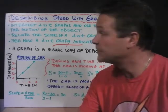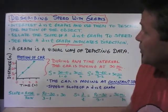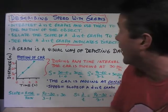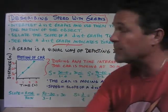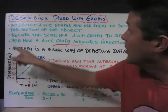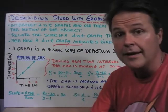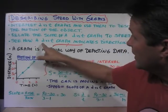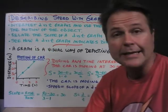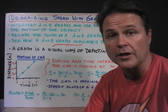Describing speed with graphs. In this video, we're going to interpret distance versus time graphs and use them to describe the motion of an object. We're going to relate the slope of a distance-time graph to speed. And finally, we're going to see how a distance versus time graph indicates the direction of the motion of an object.